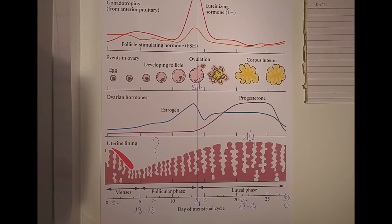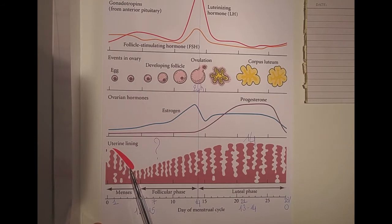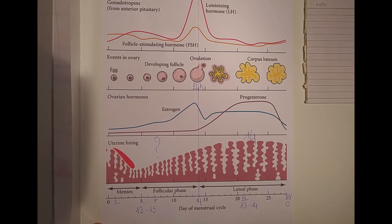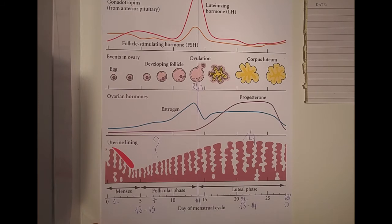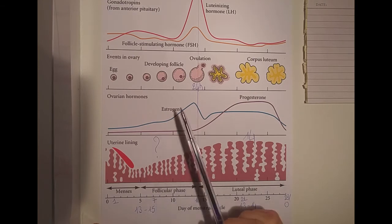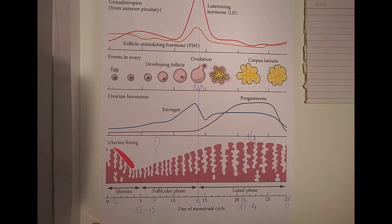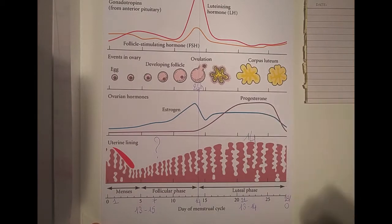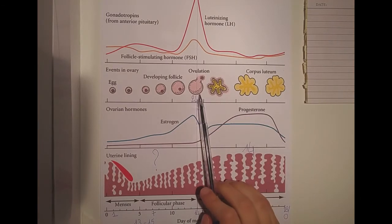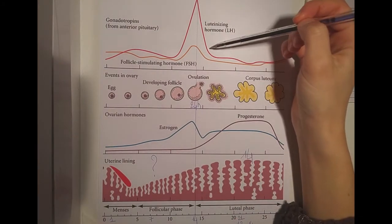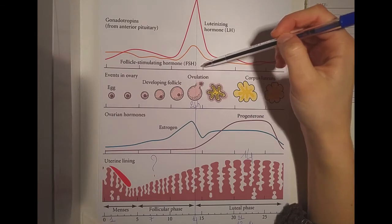Apart from triggering the LH peak, estrogen is the main hormone responsible for uterine lining growth — it makes the endometrium grow. After your period clears the lining away, it immediately starts growing again. Estrogen levels increase throughout the follicular phase, driving endometrium growth right up until the ovulation period.